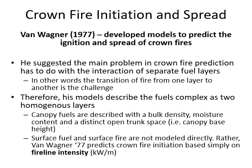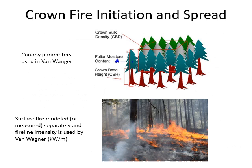In his model, he describes these two fuel complexes as basically separate things. Canopy fuels are described with bulk density, fuel moisture (moisture content in the needles), and canopy base height — the distinct open space between the surface and where crown fuels start. For the surface fire, he does not do any modeling; it's just inputted into the model in the form of fire line intensity, which we can measure in the field, estimate, or predict using another model like Rothermel or Mel's spread model.